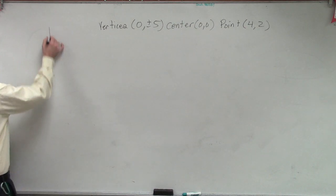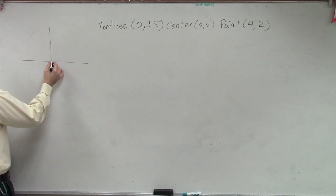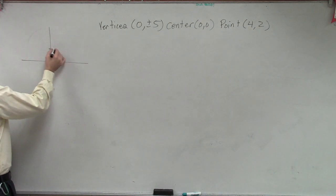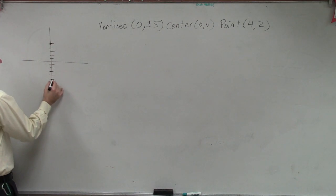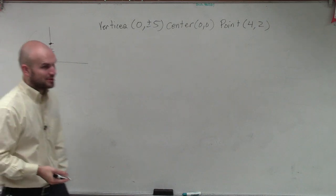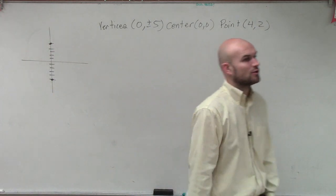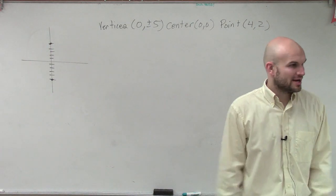So again, what I like to do is just kind of plot the points. My vertices are at zero plus five and zero negative five. So ladies and gentlemen, am I going to have a vertical or a horizontal? Vertical. Vertical, right?